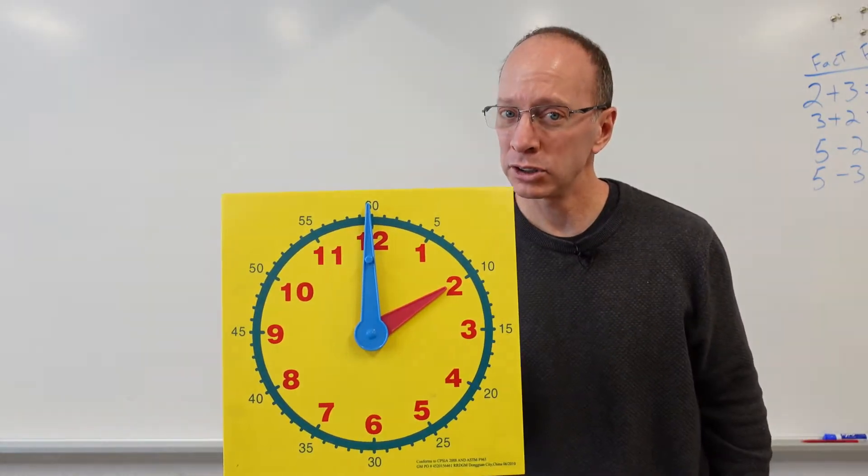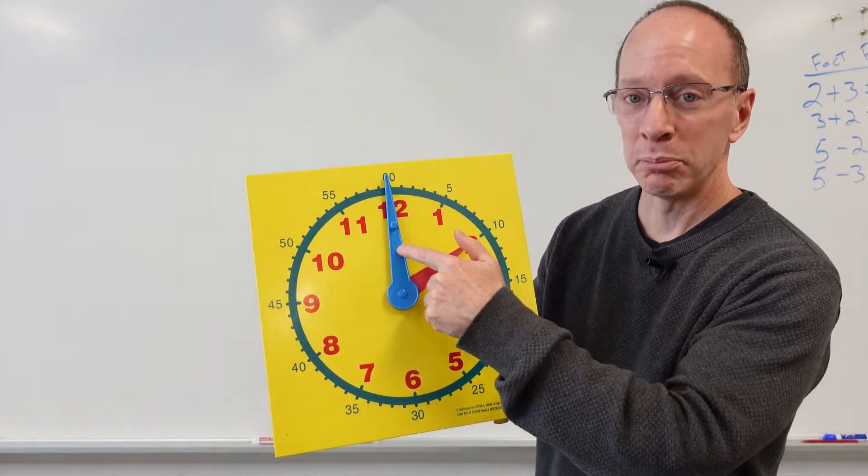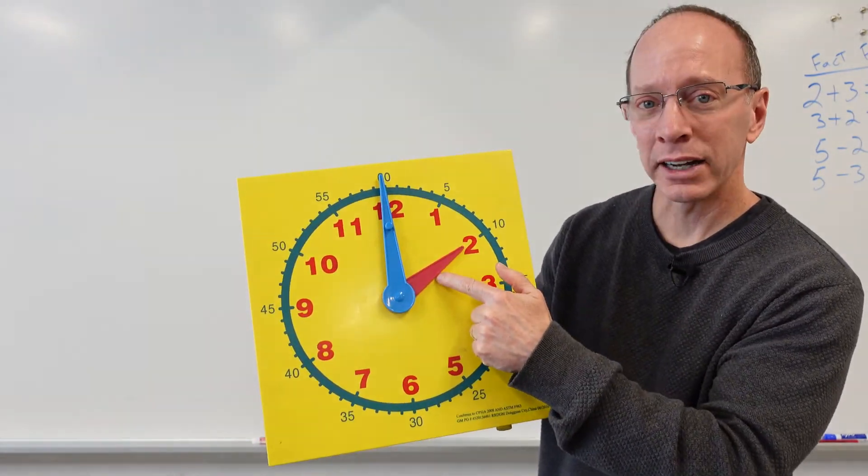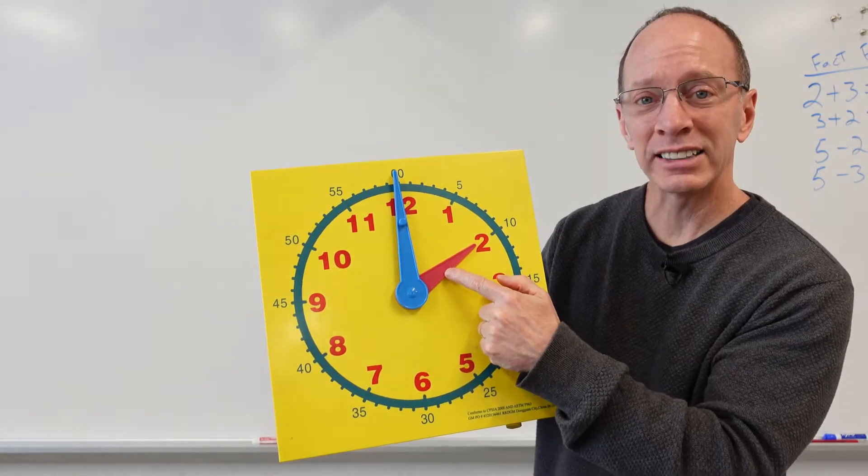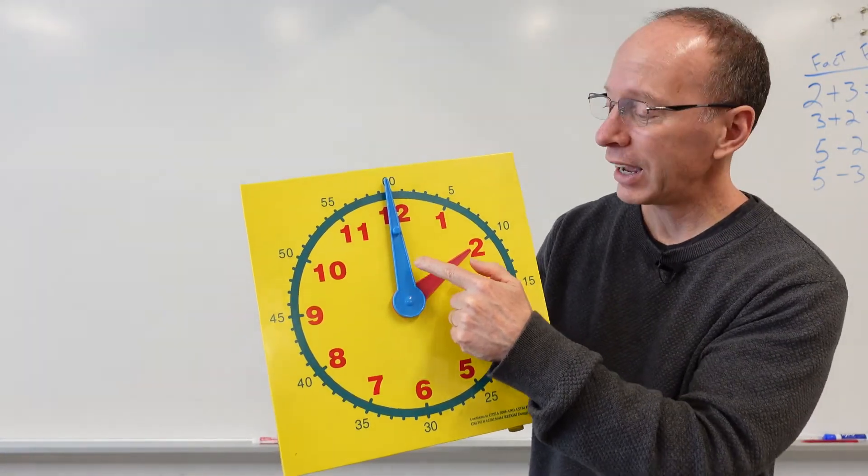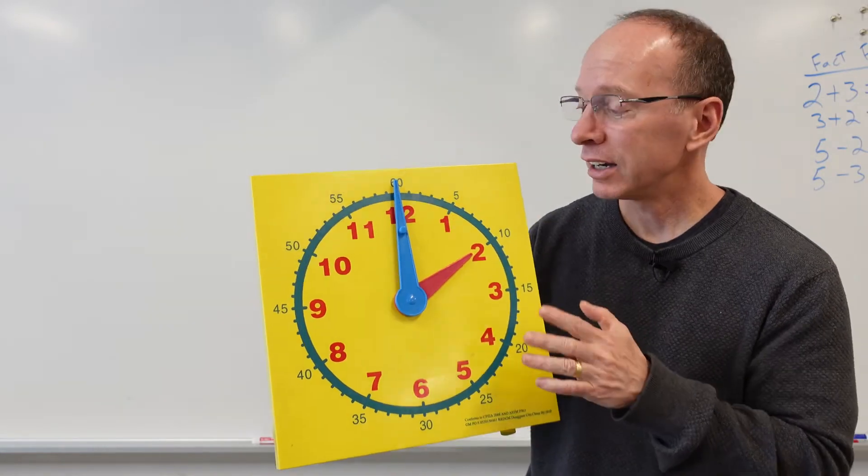We also have two hands on this clock, right? We have a big hand and a little hand. This little hand is an hour hand, and the big hand is a minute hand.